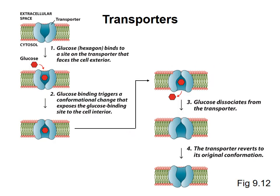To see how transporters work, let's look at the glucose transporter as an example. The transporter has a binding site that is specific for the monosaccharide glucose. At the top left, the transporter is shown with its glucose binding site open towards the outside of the cell. When a glucose molecule binds to the site, it causes a change in the shape of the transporter that closes the binding site to the outside of the cell and opens it to the inside. The glucose molecule can then dissociate from the transporter into the cell, which causes a change in shape back to the original conformation with the binding site exposed to the outside of the cell.